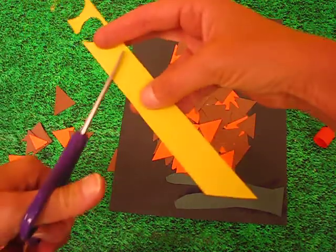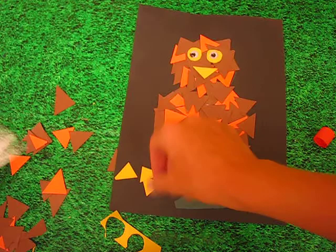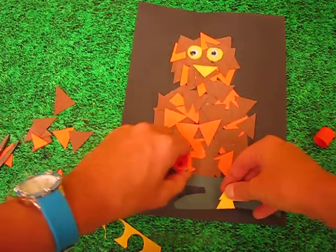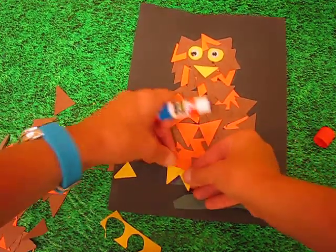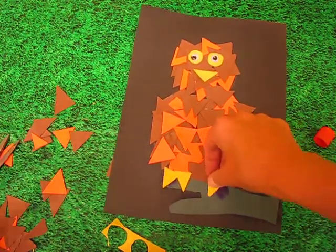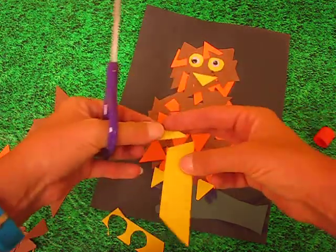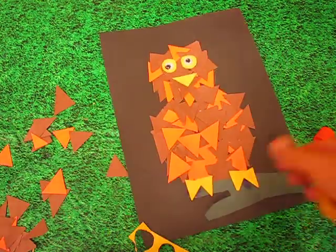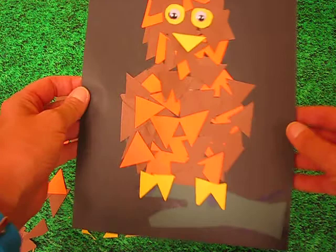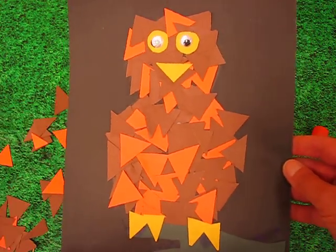And then if you just do a couple of triangles, just do another one there. And he's got his claws holding on. And there you go boys and girls, you've just made yourself an owl collage. Now it's your turn. Let's make some art.